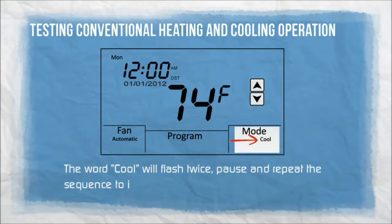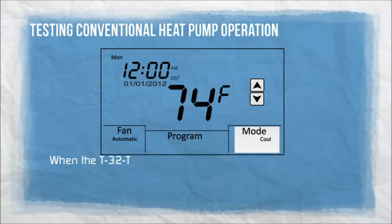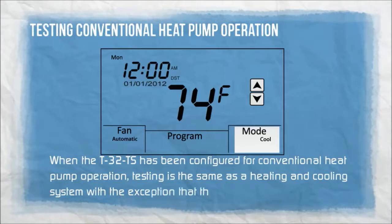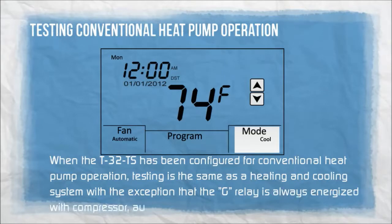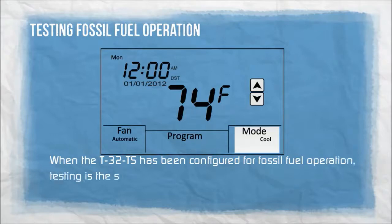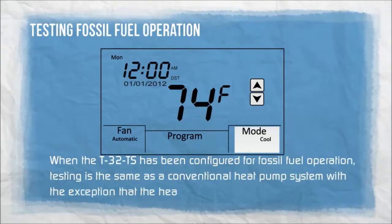When the T32TS has been configured for conventional heat pump operation, testing is the same as a heating and cooling system with the exception that the G relay is always energized with compressor, auxiliary, and emergency heat calls. When configured for fossil fuel operation, testing is the same as a conventional heat pump system with the exception that the heat pump is never allowed to run when the fossil fuel furnace is energized.